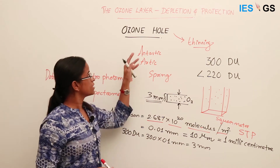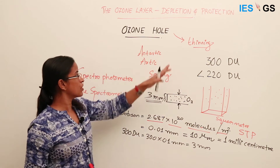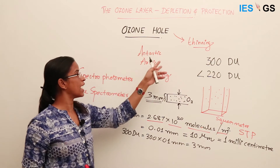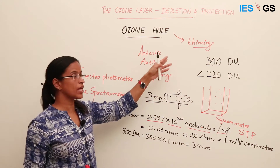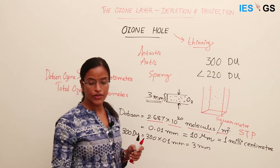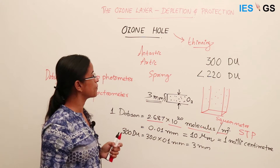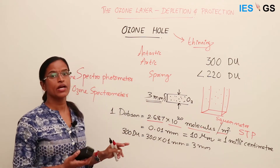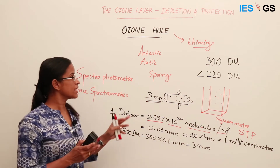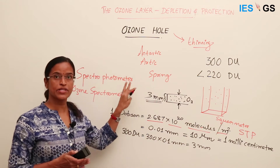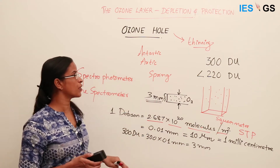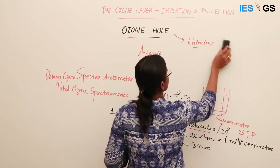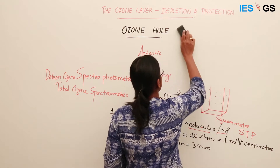The ozone hole phenomenon occurs around the polar regions — Arctic and Antarctic. We know that ozone depleting substances are present throughout the atmosphere, but this ozone hole phenomenon happens specifically in polar regions due to atmospheric phenomena that play a role there.